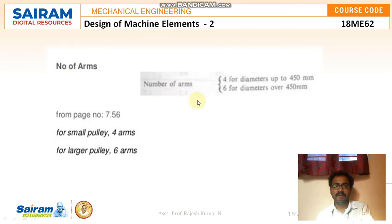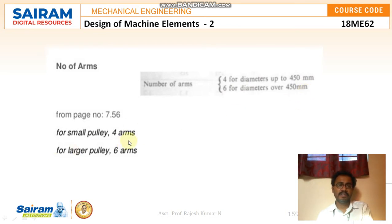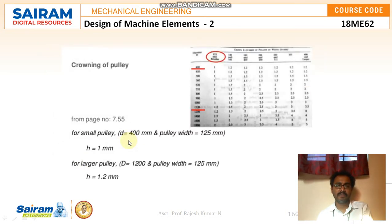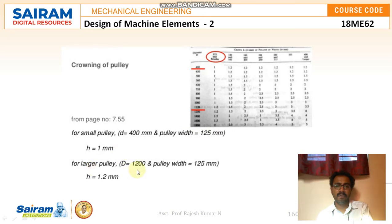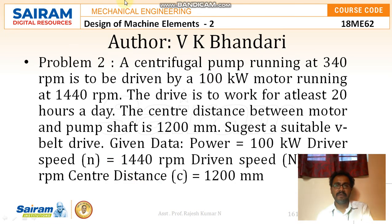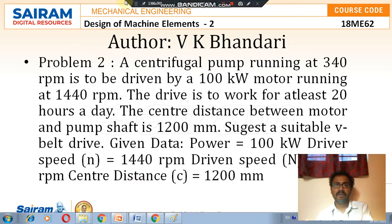The number of arms is 4 for pulley diameters up to 450 mm and 6 for diameters over 450 mm — so the smaller pulley has 4 arms and the larger pulley has 6 arms. For crowning: the smaller pulley has a crown of 4 mm and pulley width of 125 mm, with a thickness of 1 mm. For the larger pulley, the recommended thickness is 1.2 mm.